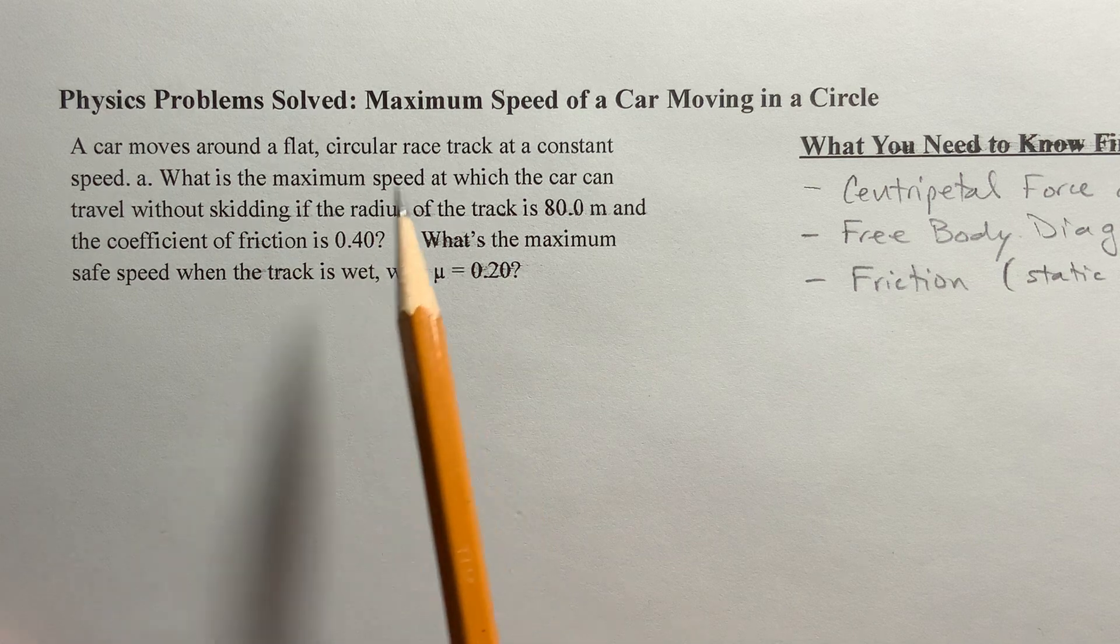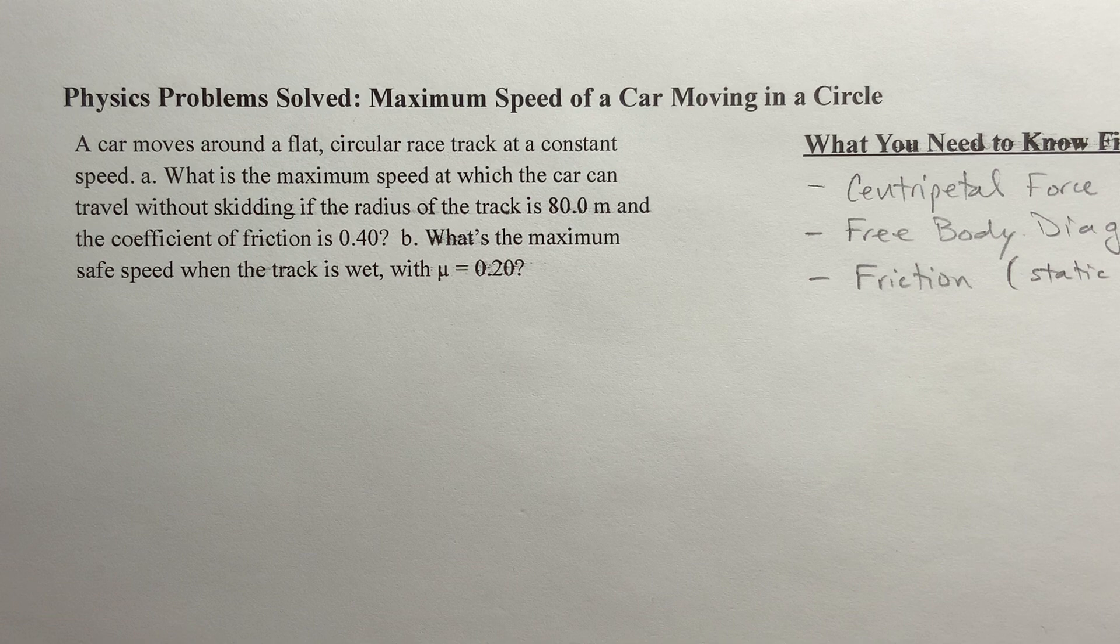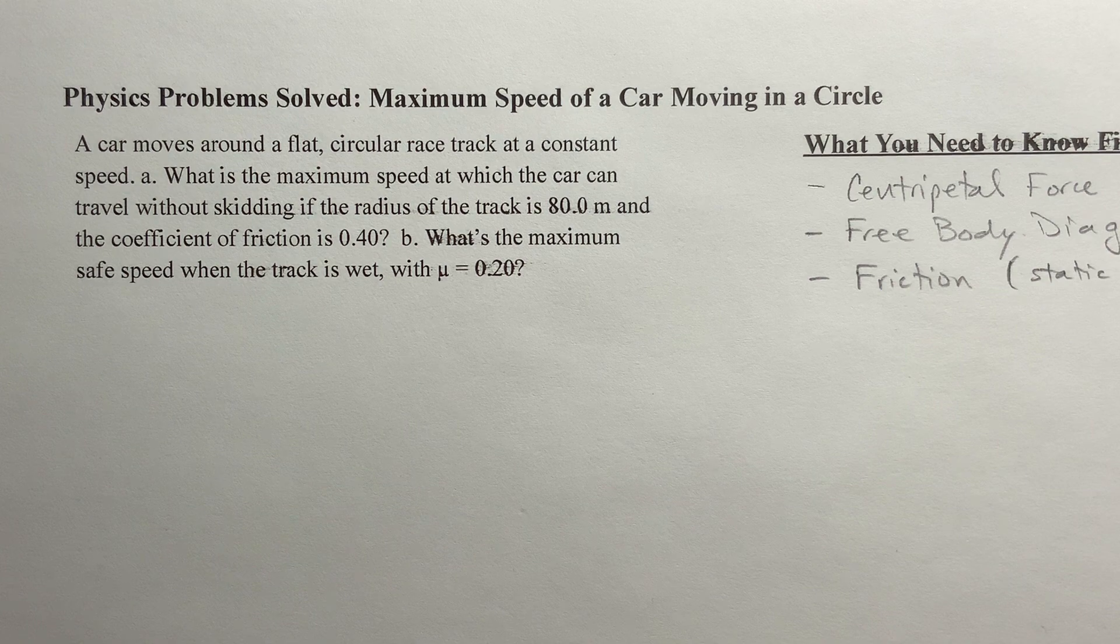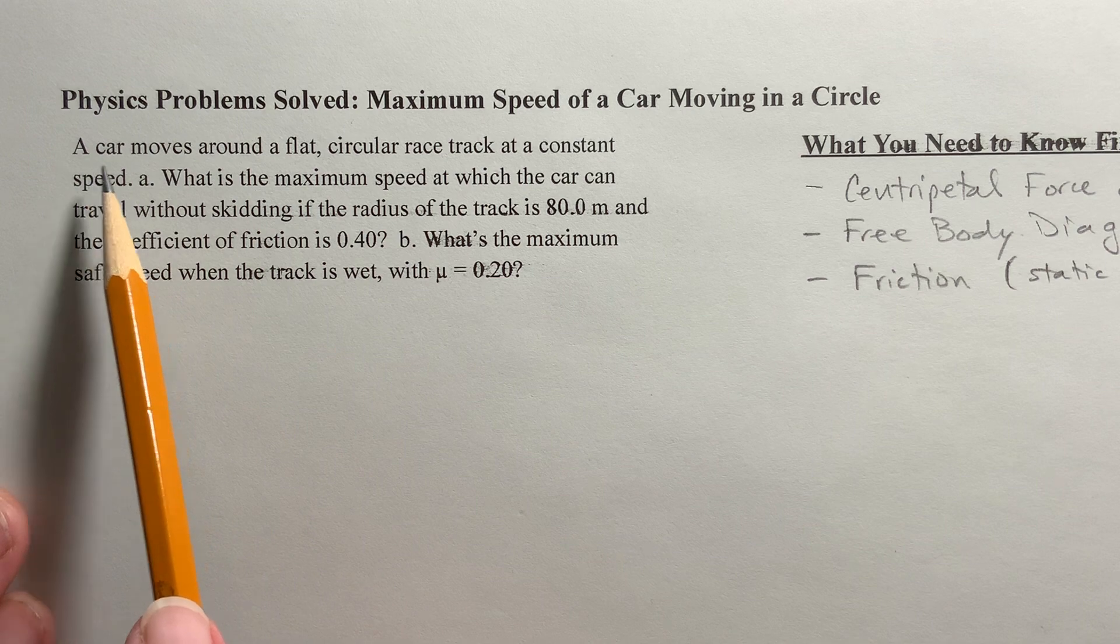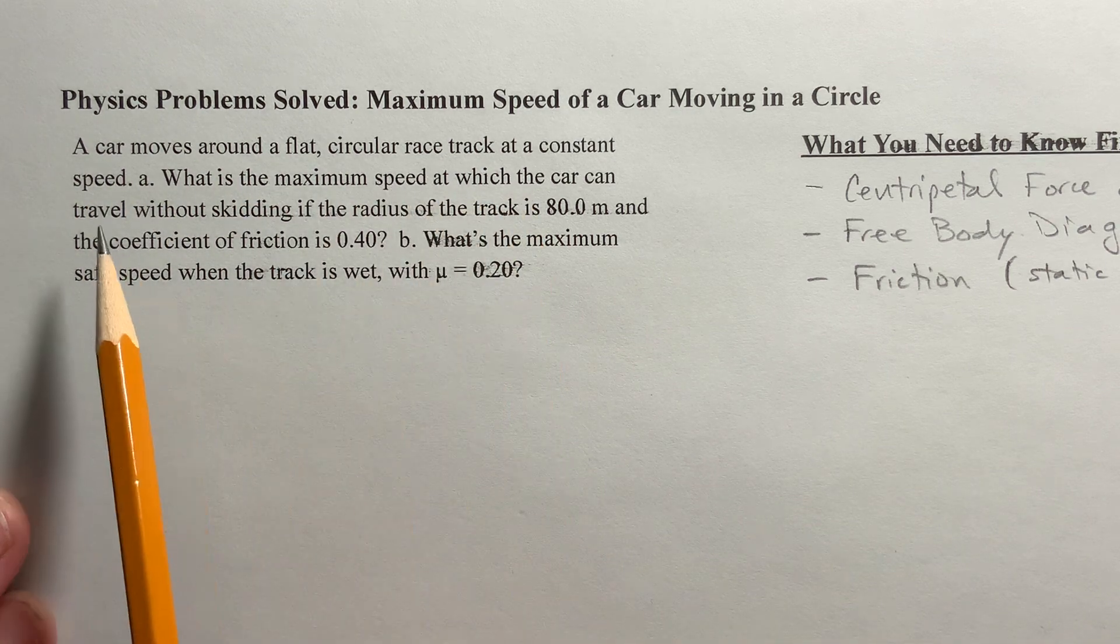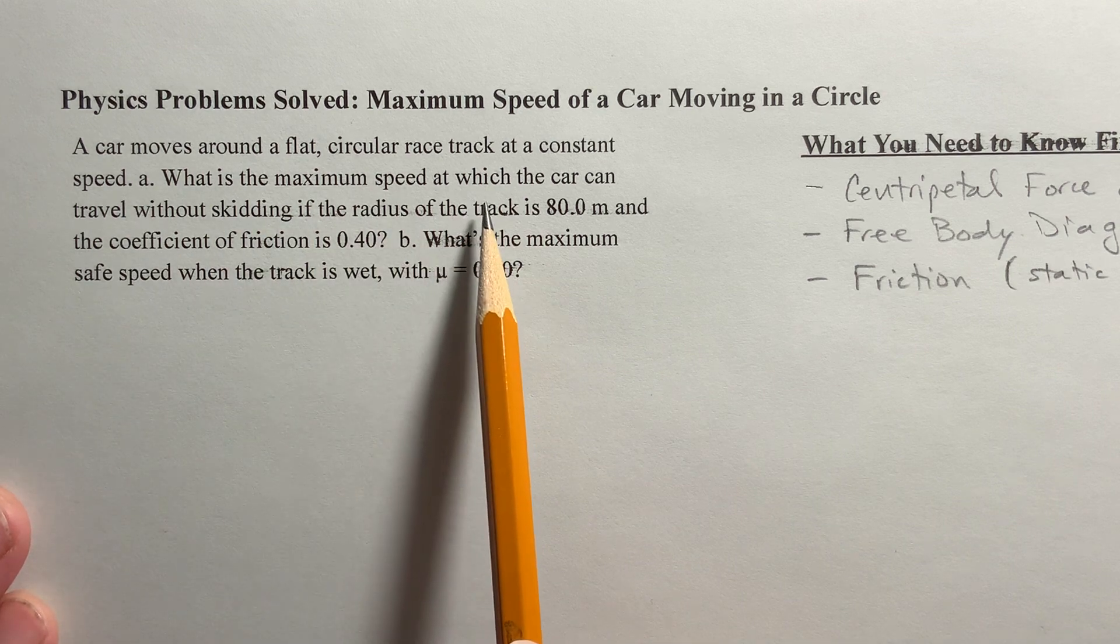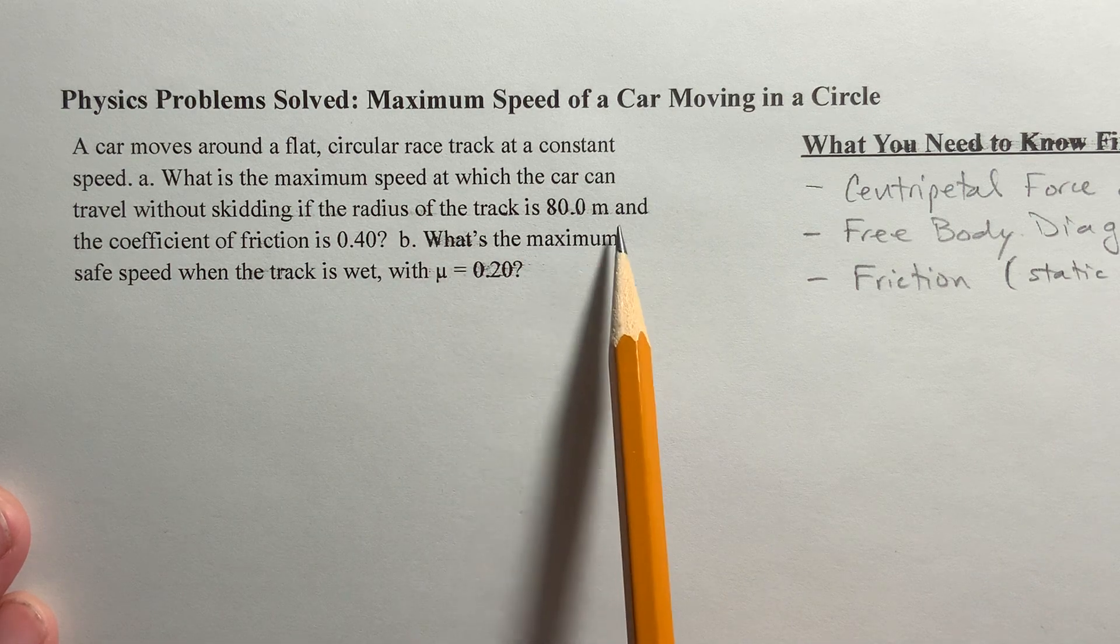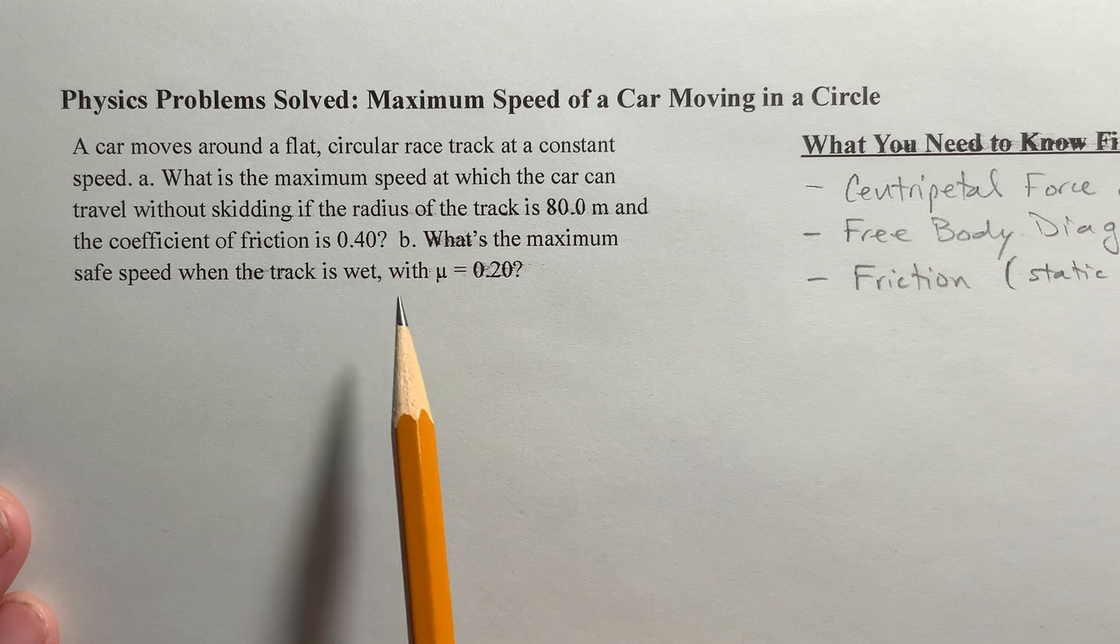Today's problem, I give it a title, The Maximum Speed of a Car Moving in a Circle. This is kind of a classic problem. I bet every physics textbook has a version of this problem in it. A car moves around a flat circular racetrack at a constant speed. What is the maximum speed at which the car can travel without skidding if the radius of the track is 80 meters and the coefficient of friction is 0.4?